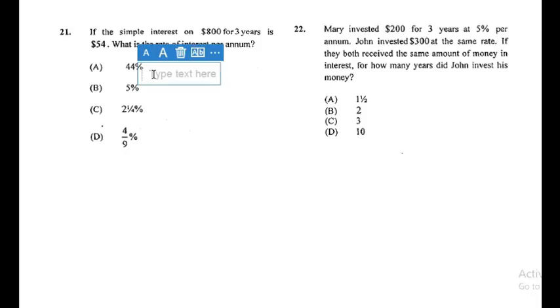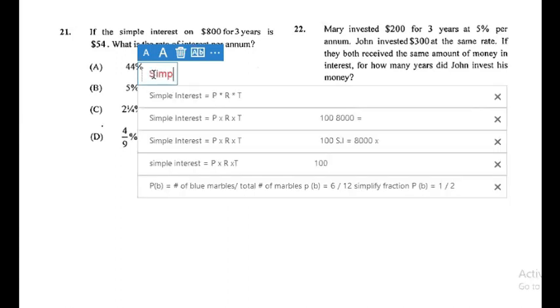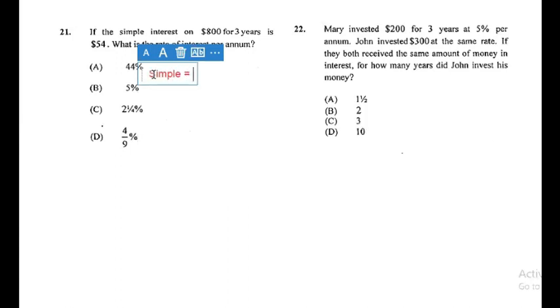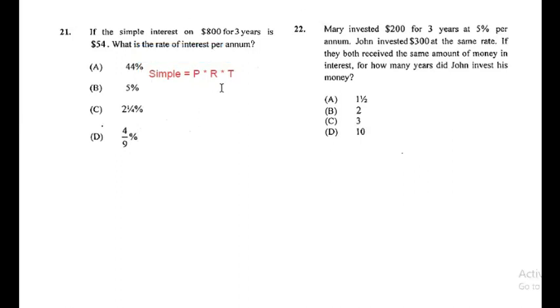Question 21 states: if the simple interest on $800 for three years is $54, what is the rate of interest per annum? Remember our formula for simple interest: Simple Interest equals Principal times Rate times Time, all divided by 100.